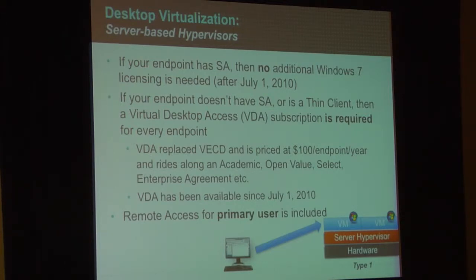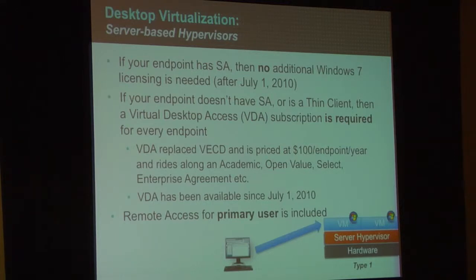If your endpoint does not have SA, then you have to buy VDA — that's your only option. You can buy VDA at $100 per device, or buy license plus SA and keep renewing SA. Most people choose VDA because it's a subscription license and you don't have the hassle of changing the contract over and over again. Most people I see buy VDA and be done with it.